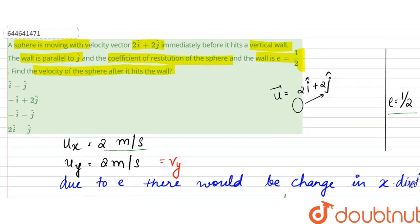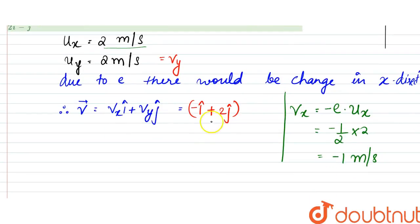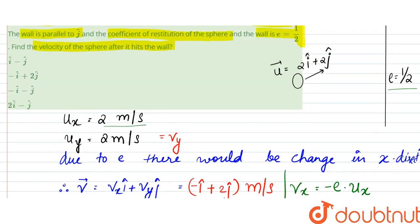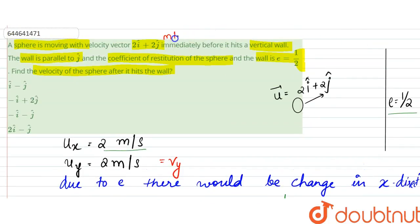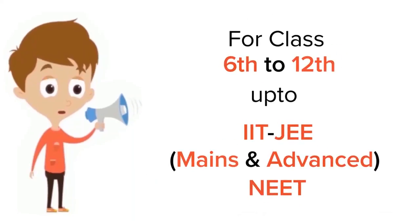The unit that we are considering is meters per second here. So this would be the velocity, that is minus i plus 2j. So option B is our answer. Thank you. For class 6 to 12, IIT-JEE and NEET level, trusted by more than 5 crore students.